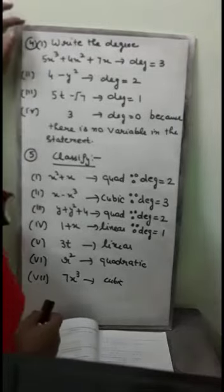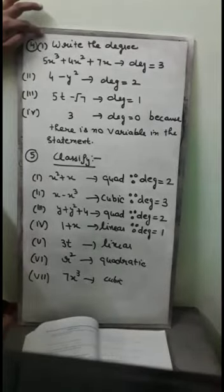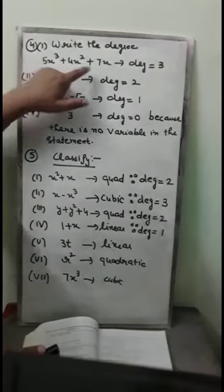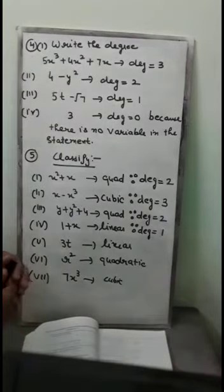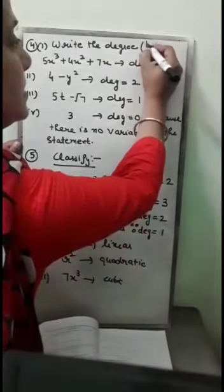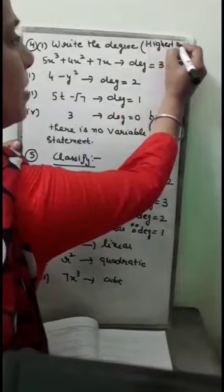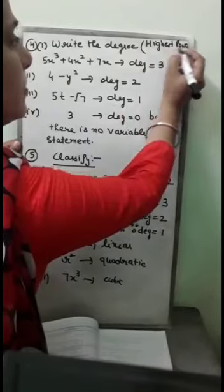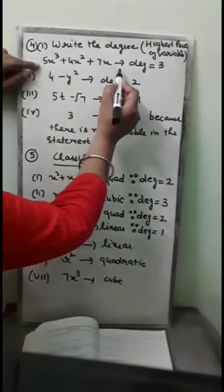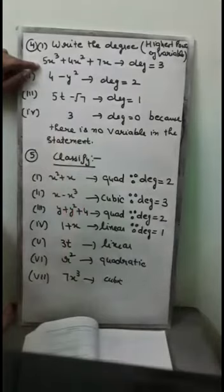In sum number 4, you are asked to write the degree of the given polynomials. Degree is the highest power of the variable in the statement. In the first part, the expression is 5x cubed plus 4x squared plus 7x. The highest power of the variable is 3, so the degree is 3.